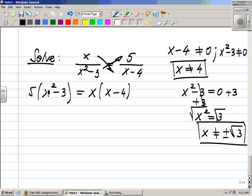The other cross product, x times x minus 4. Now, let's perform this multiplication. I got 5x squared on the left, minus 5 times 3, which is 15, equals x times x would be x squared, minus x times negative 4 would be, actually it's minus 4x, or x times negative 4 is minus 4x.